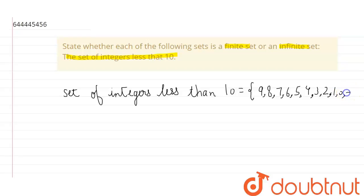Now there are integers, so it will go to minus 1 and so on, okay? So till it will go up till minus infinity, okay? So it is clear that set of integers less than 10 is an infinite set. It is an infinite set.